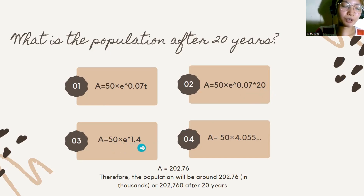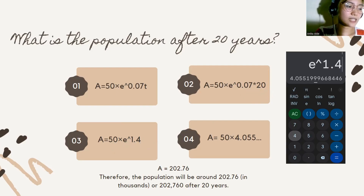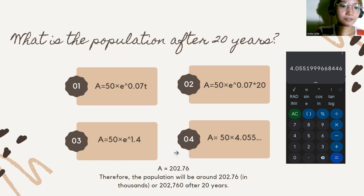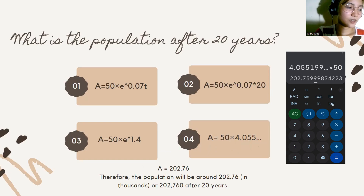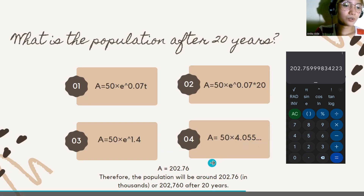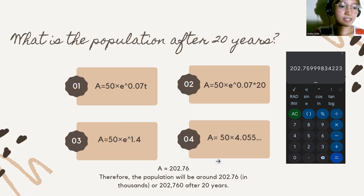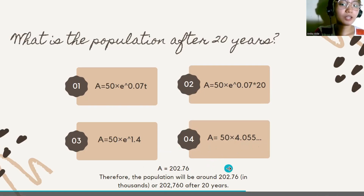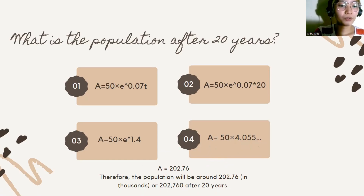So we have 50 times E raised to 1.4. We need to evaluate E raised to 1.4, which equals approximately 4.055. Multiplying 50 times 4.055, we get the answer of 202.76. Therefore, the population will be around 202.76 thousand, or approximately 202,760, after 20 years.